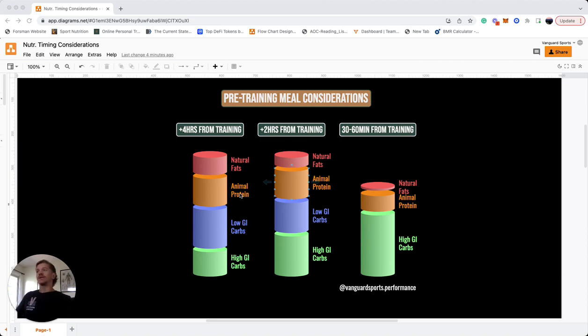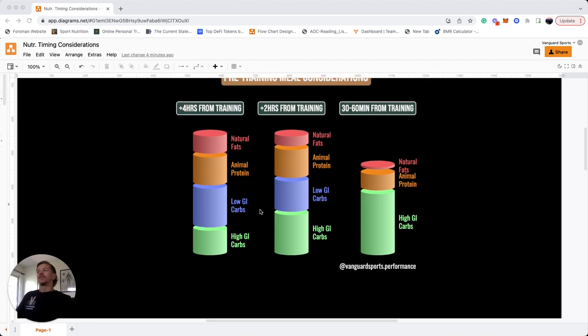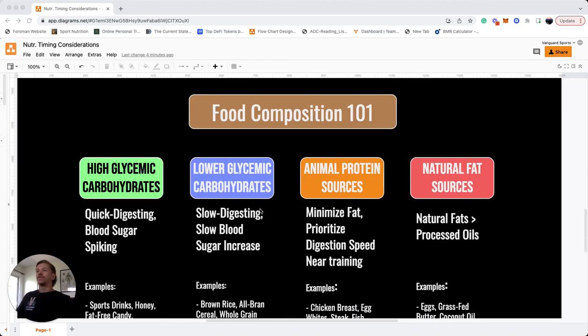Before we dive into our main topic, we're going to go over a bit of food composition 101 for the different types of foods we're going to be getting in this pre-training meal. There's four different things we're going to cover: high glycemic carbs, lower glycemic carbs, animal protein sources, and natural fat sources.